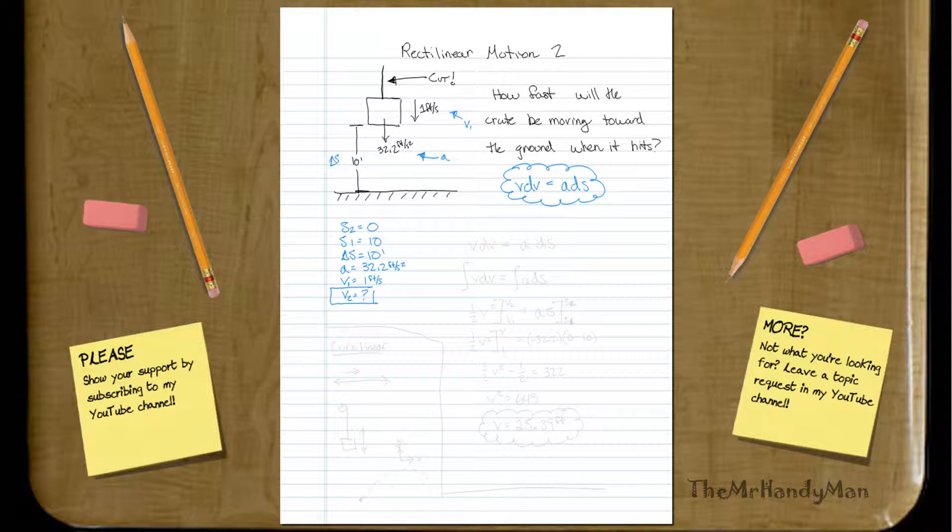So what we're going to use is this equation: vdv is equal to ads. What I suggest is, why don't we take the integral of this. Integral vdv is equal to the integral of ads.